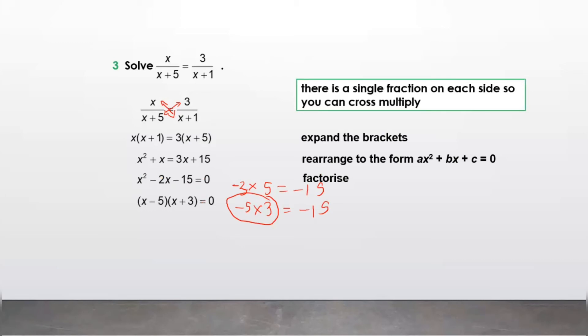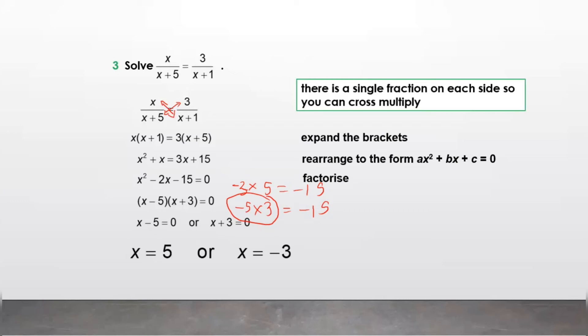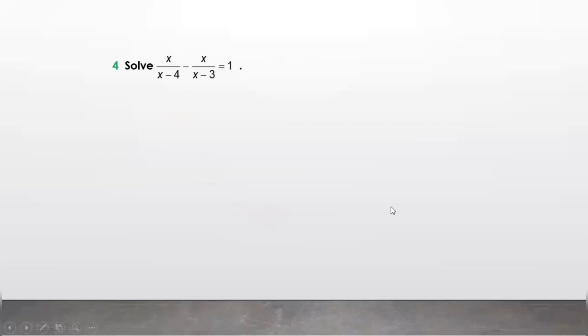(x minus 5)(x plus 3) are the factors — either of them could be zero. If x minus 5 equals 0, then x equals 5. If x plus 3 equals 0, then x equals minus 3. So this is how we found the solution of this algebraic fraction equation.